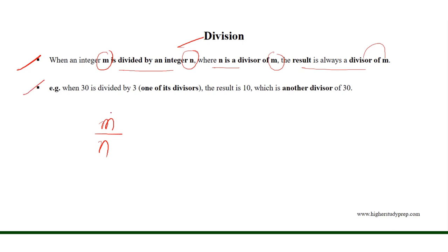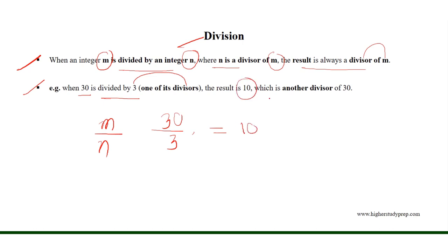For example, when 30 is divided by 3, where 3 is one of its divisors, the result is equal to 10, which is another divisor of 30.